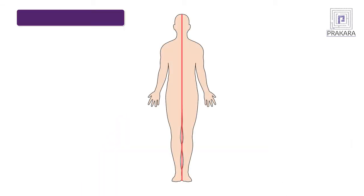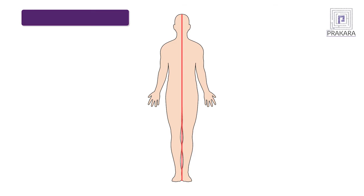To understand the next directional terms, we need to divide the body with an imaginary line known as the midline, passing through the center and dividing the body into two equal halves. The first directional term is medial, which means closer towards the midline. For example, the eyes are medial to the ears. The second directional term is lateral, which means further away from the midline. For example, the ears lie lateral to the nose.